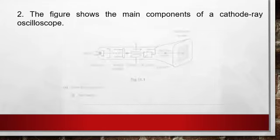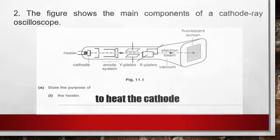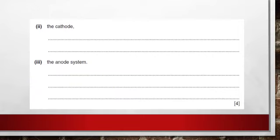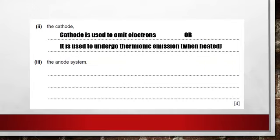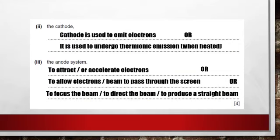Let us proceed to the next problem. The figure shows the main components of a cathode ray oscilloscope. State the purpose of the heater. The heater is used to heat the cathode. What about the purpose of the cathode? Cathode is used to emit electrons, or it is used to undergo thermionic emission when heated. What about the anode system? The anode system is used to attract or accelerate electrons, or allow electrons or beam to pass through the screen, or to focus the beam or direct the beam or produce a straight beam.